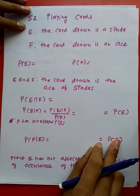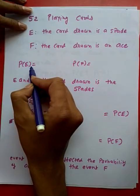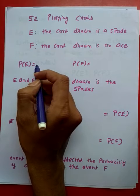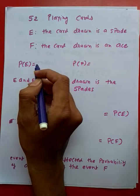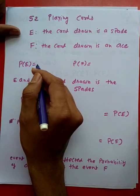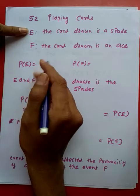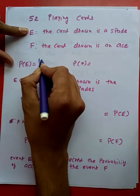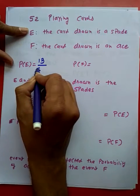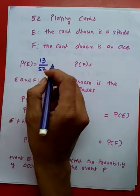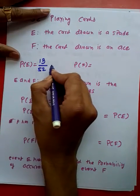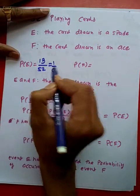Here, the probability of E - if I try to calculate, then how many cards are there? There are 52 cards, and how many spades are there? We know there are 13 spades and 52 total cards. So the probability of E is 13/52, which equals 1/4.